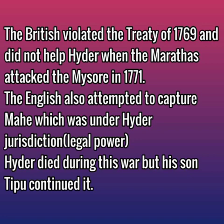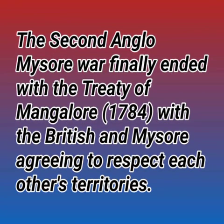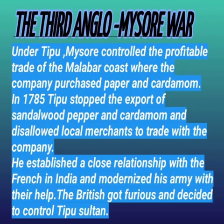The English also attempted to capture Mahi, which was under Hyder Ali's jurisdiction. Hyder Ali died in 1782 during this war, but his son Tipu continued it for one more year. When no solution was reached, this war ended and they signed the Treaty of Mangalore in 1784. The conditions were again that they agreed to respect each other's territories.